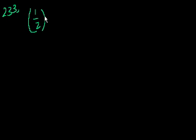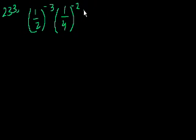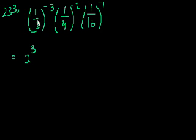They have 1 half to the minus 3 power times 1 fourth to the minus 2 power times 1 sixteenth to the minus 1. The first thing I do when I see negative exponents, just so they don't confuse me, is that I just invert all of the numbers. So this is the exact same thing as 2 to the third power. This is times 4 squared times 16.